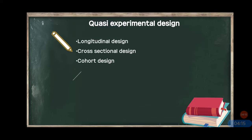In longitudinal design there are multiple points in time, and in cross-sectional there are multiple groups studied each at the same time. Cross-sectional method is a quicker method because we study different age groups simultaneously and do not have to wait. Longitudinal method is lengthy, of course.